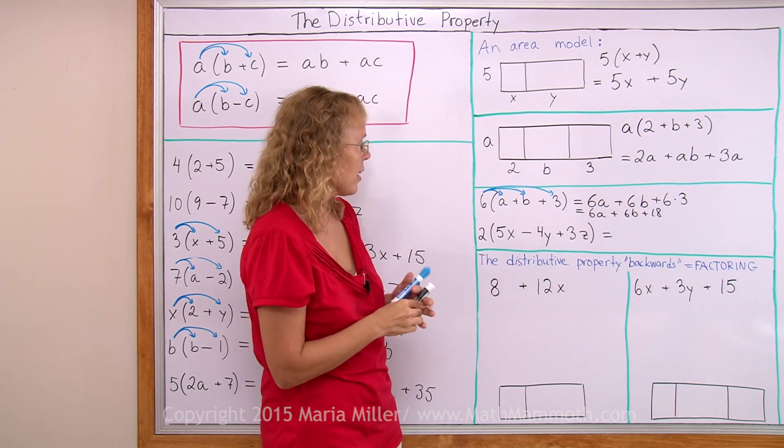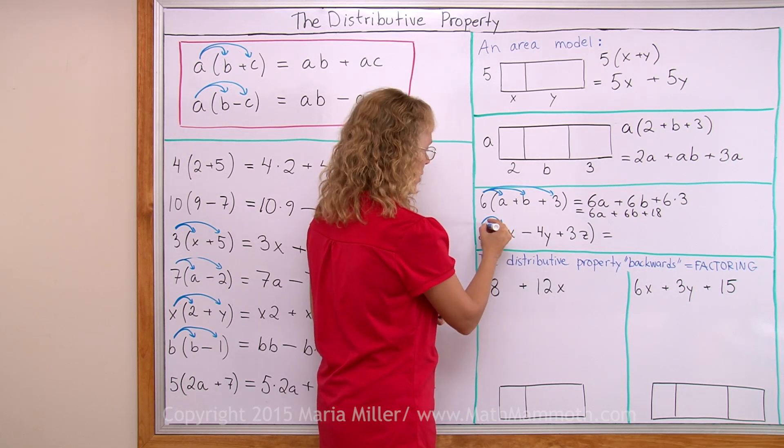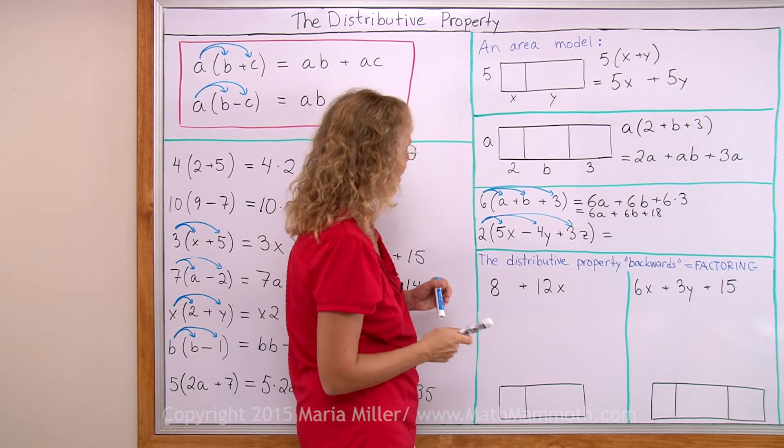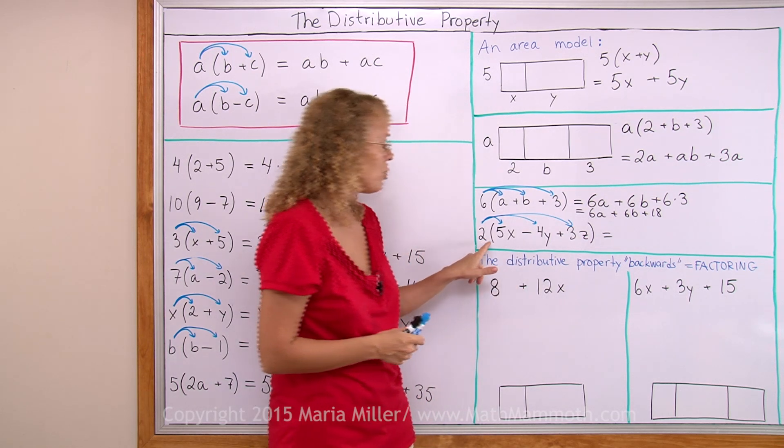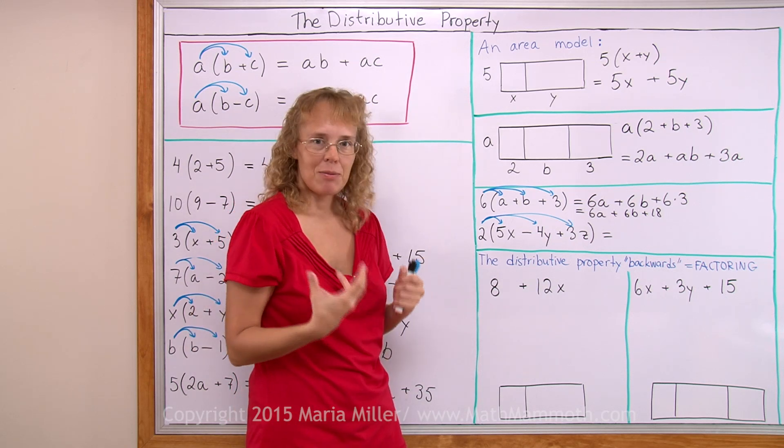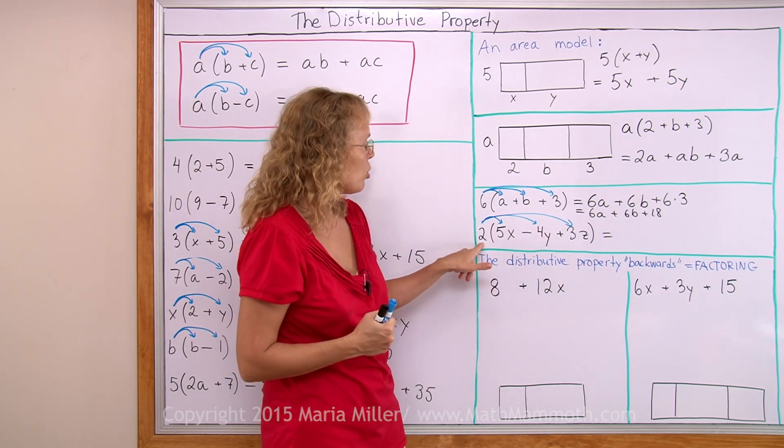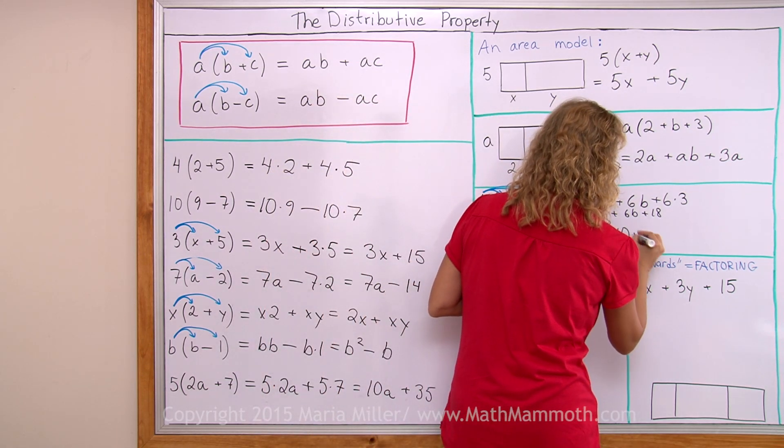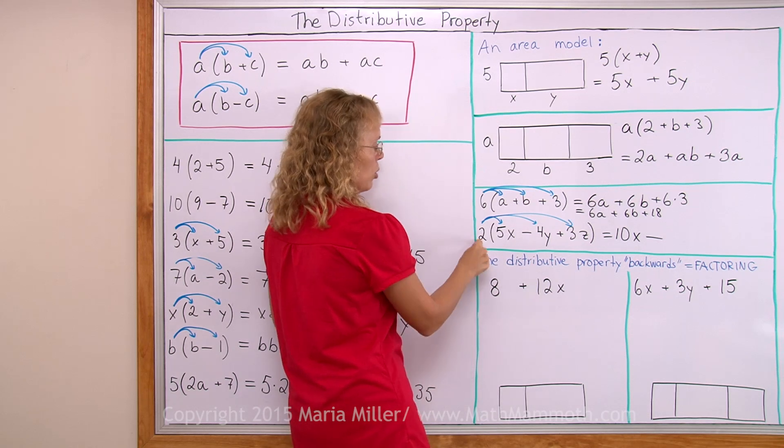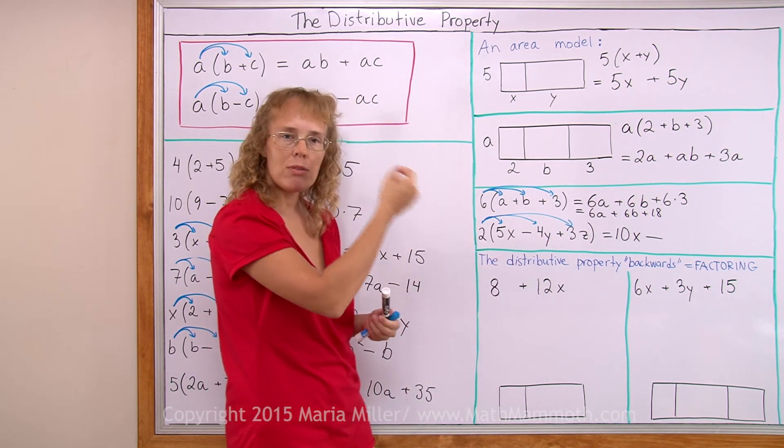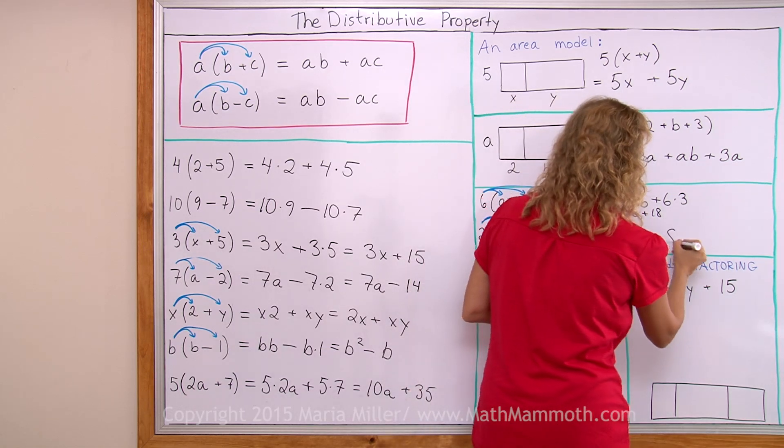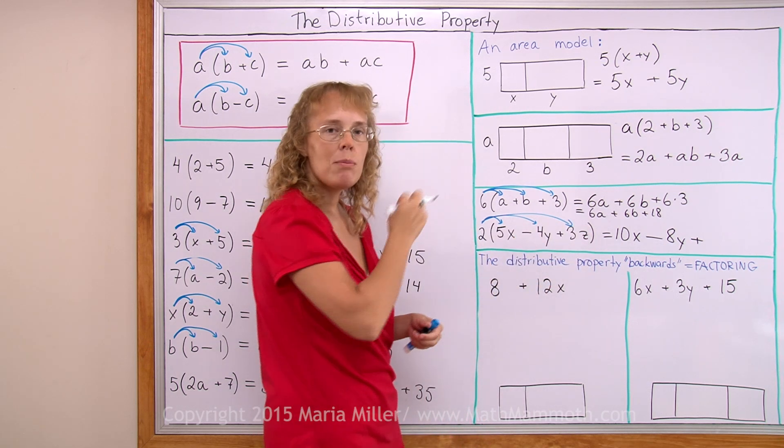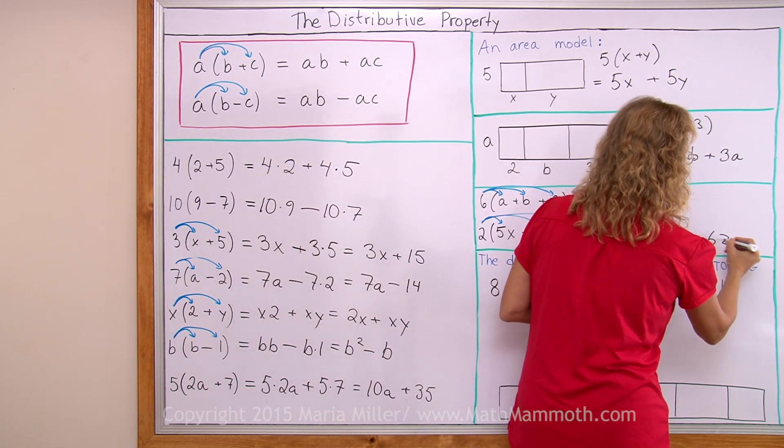This other one, again, the same thing happens. I have 2 times 5x, 2 times 4y, and 2 times 3z. So what will we get? I will get 2 times 5 times x. Can we simplify that? Just without writing down the intermediate step. 2 times 5x would give me 10x. Then comes minus, and then 2 times 4y - 2 times 4y gives me 8y. Then comes plus, and then lastly 2 times 3 times z - 6z. There we go.